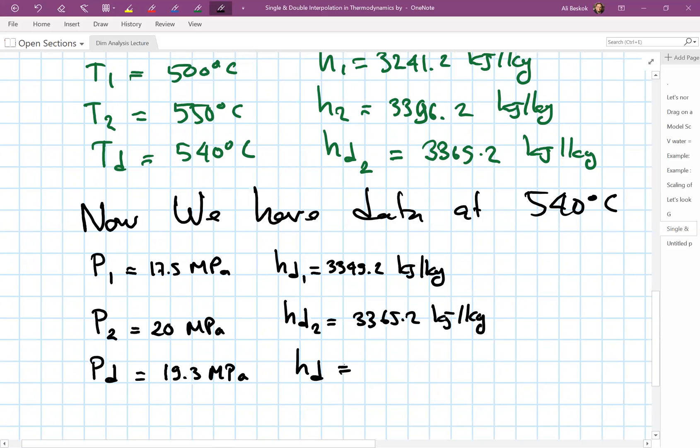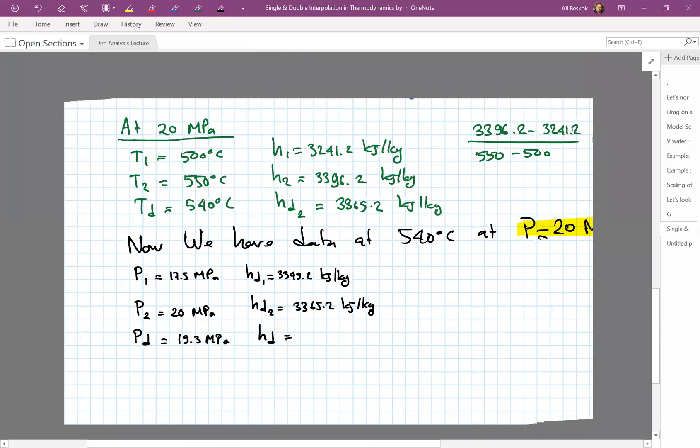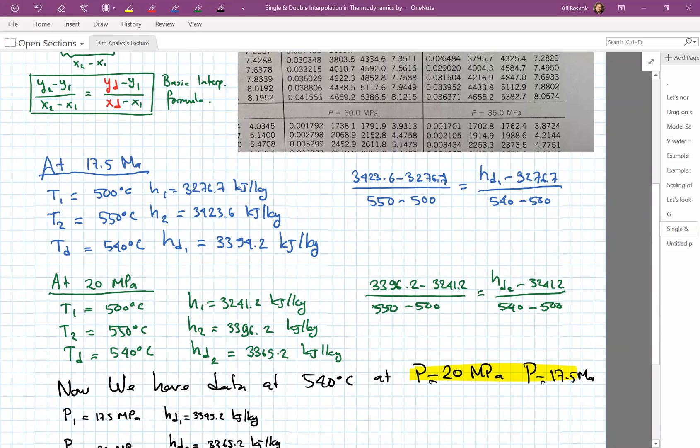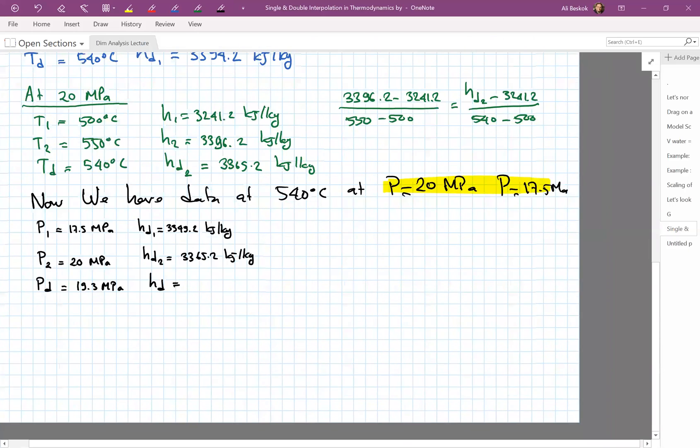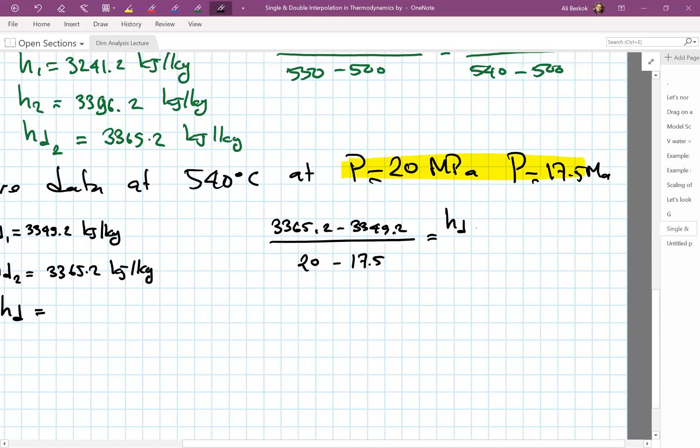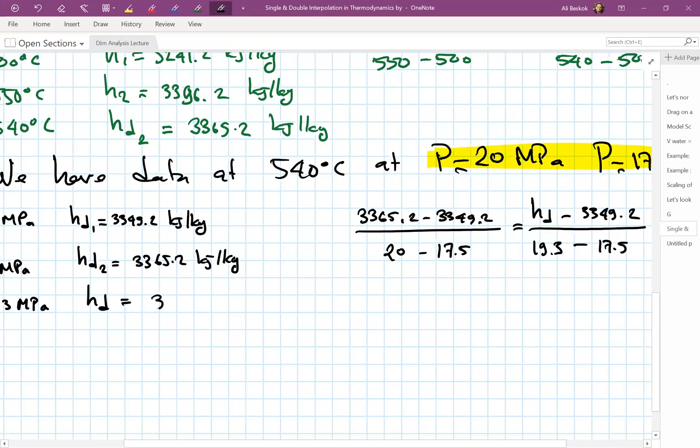Let's write the following interpolation. The same formula in the green box on top left has to be applied, but this time our x is the pressures and the y's are still the enthalpies. We write 3365.2 minus 3349.2 divided by 20 MPa minus 17.5 MPa, which equals our desired value minus 3349.2. The pressure is 19.3, our desired pressure, minus 17.5. If you solve for this, the desired enthalpy is 3360.7 kilojoules per kilogram.